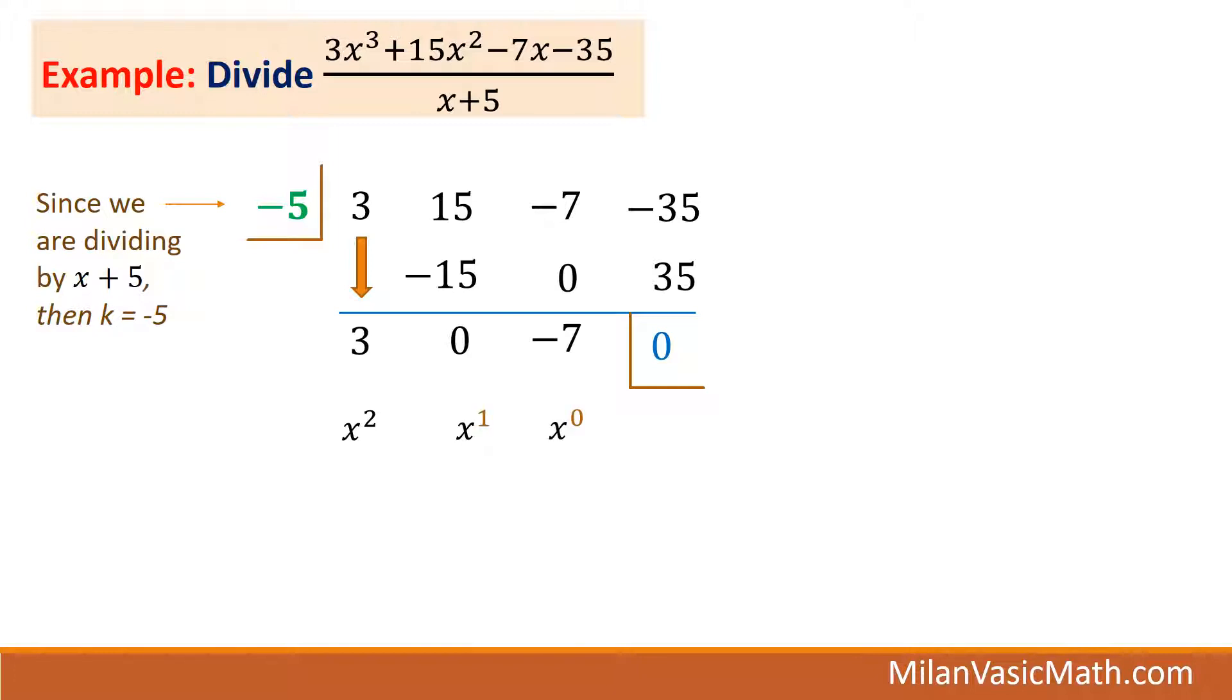So, what we get is 3x squared plus 0x minus 7 plus 0 divided by the binomial x plus 5. That is what the quotient of that expression is. We can simplify a little. So it's 3x squared minus 7. That's the final answer.